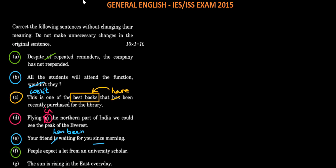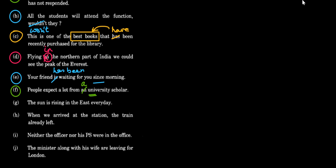Next: People expect a lot from a from an university scholar. This is a common mistake. Although university starts with U, which is a vowel, it is phonetically spelled as you. Why you? And Y is not a vowel. So an cannot come with Y. It will be a. People expect a lot from a university scholar. Next: The sun is rising in the east every day. It is happening every day, it's a universal truth. So is rising is not the correct one. It would be rises. The sun rises in the east every day.